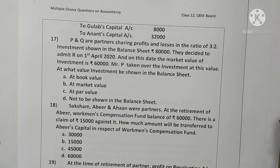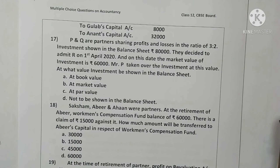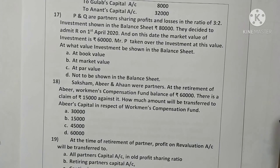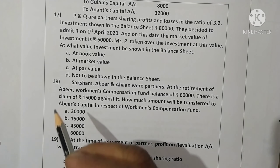Question seventeen: P and Q are partners sharing profits and losses in ratio 3:2. Investments shown in balance sheet at Rs. 80,000. They admitted R on 1st April 2020; market value of investment is Rs. 60,000. P takes over the investment at this value. The investment will not be shown in the balance sheet. Here option D is correct.